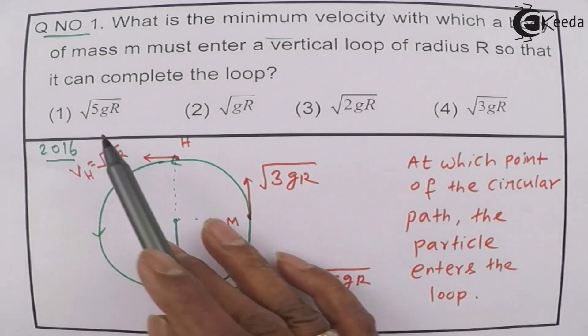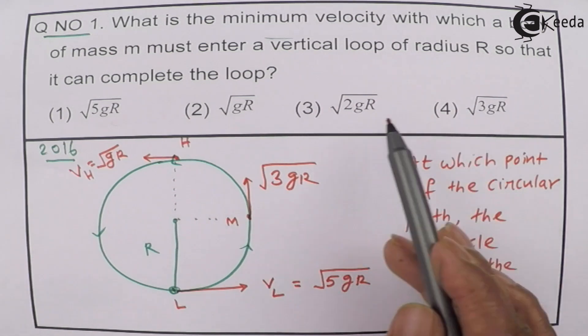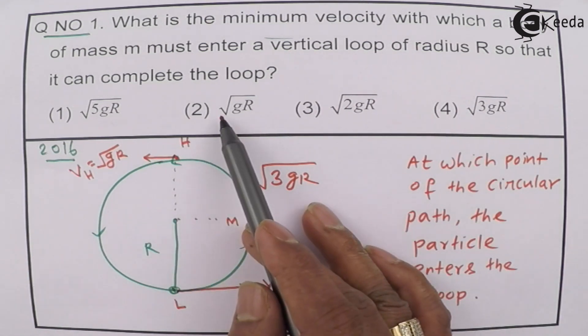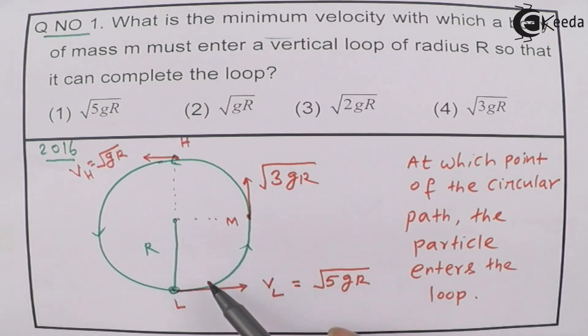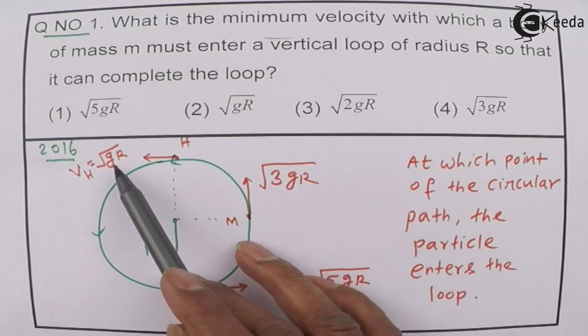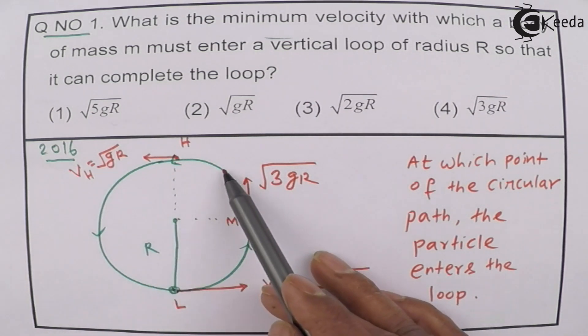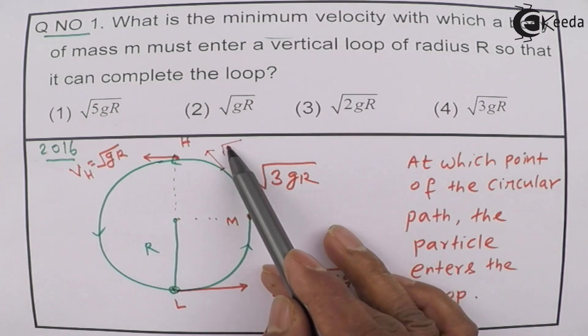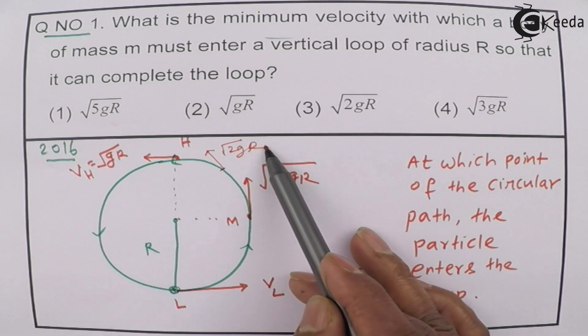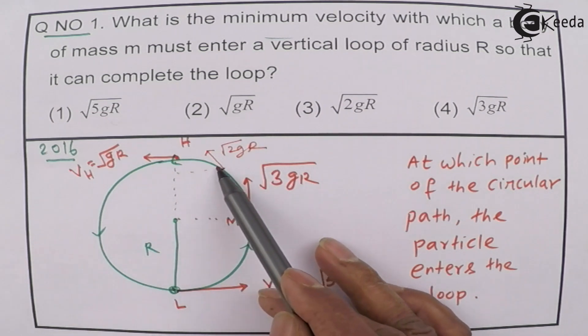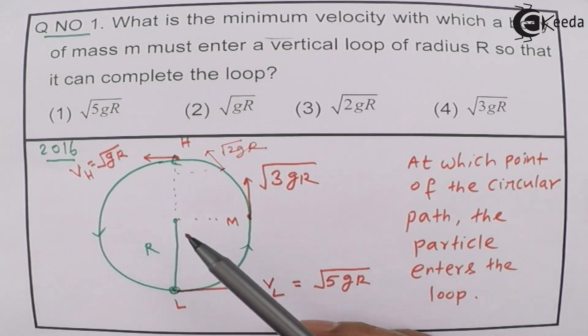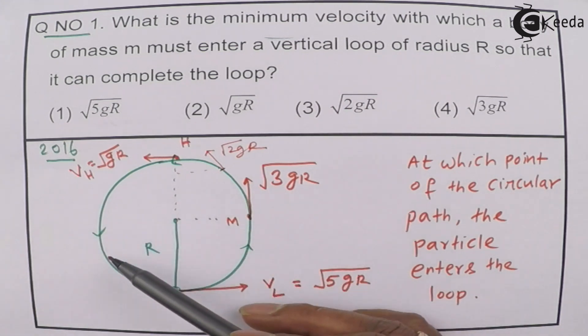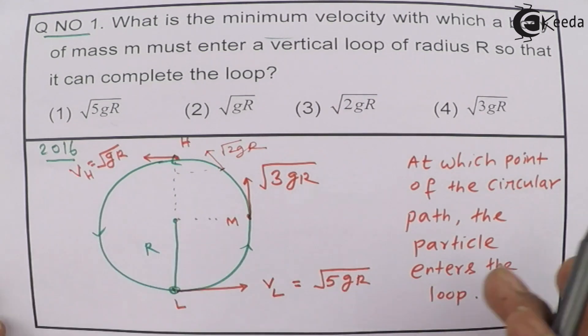At the lowest point, this is the answer. At the midpoint, this is the answer. At the highest point, this is the answer. This is √5, √3, and √1. So, √2 will be somewhere here. And at any point, suppose, it is √(2GR). So, that all depends on which point you allow the body to enter the loop. So, in this way, all answers are correct.